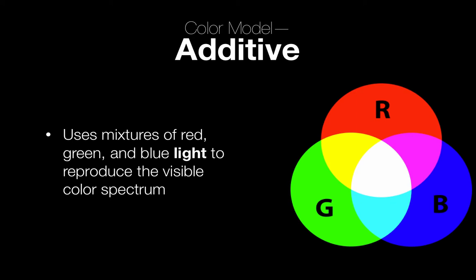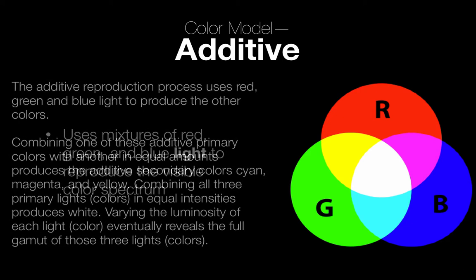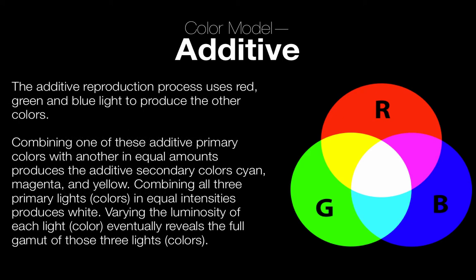The additive color model uses mixtures of red, green, and blue light to reproduce the visible color spectrum. This applies to pretty much all your electronic devices — monitors, TVs, cell phones, iPads, video games — they all use RGB. Combining one additive primary color with another in equal amounts produces the additive secondary colors: cyan, magenta, and yellow. Combining all three primaries in equal intensities produces white. That's basically how a monitor, TV, or cell phone works.